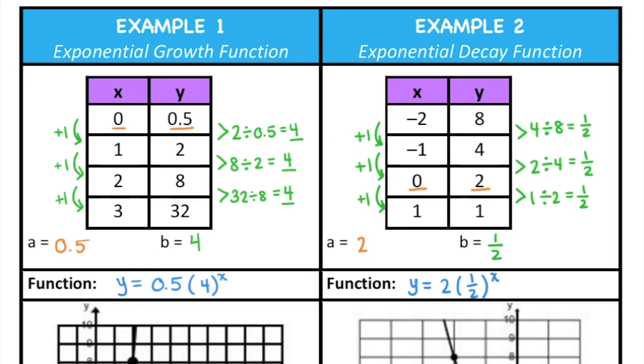And we can say that because we've identified from the table that there's a common ratio between the y values. We can also see that in our functions that we wrote for these. For the exponential growth function, that common ratio b is a whole number and it's greater than 1. But in our exponential decay function, we see that b is a fraction, it's between 0 and 1, which means that we can look at this function and we can tell that it's exponential decay.